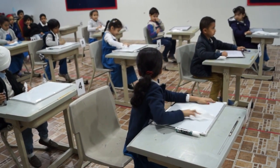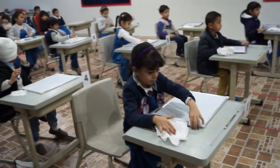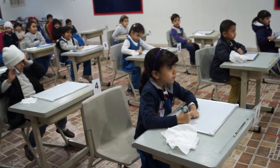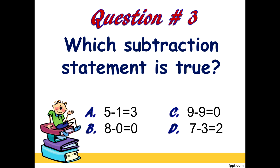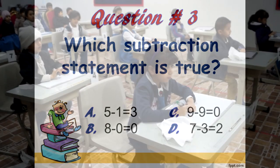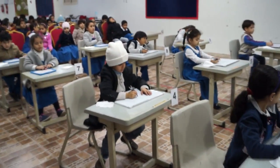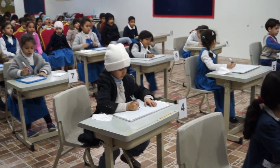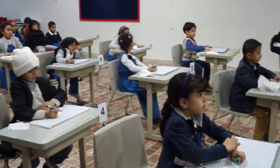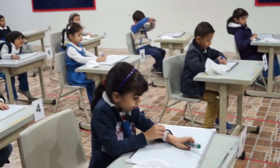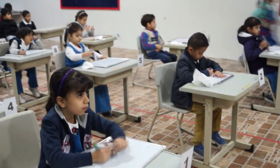Raise your answer now. Let's proceed with question number 3. Which subtraction statement is true? A, 5 minus 1 equals 3. B, 8 minus 0 equals 0. C, 9 minus 9 equals 0. D, 7 minus 3 equals 2. Again, which subtraction statement is true? Ready? Go!